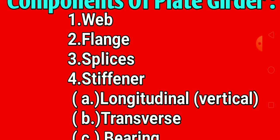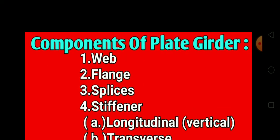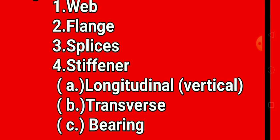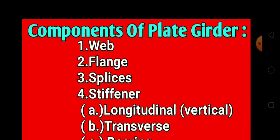Same as this, web component: web, flange, splashes, stiffener. I already told you stiffener is horizontal, vertical, okay. And you can also see longitudinal stiffener is vertical stiffener and transverse stiffener and bearing stiffener. Okay, so these are the types.